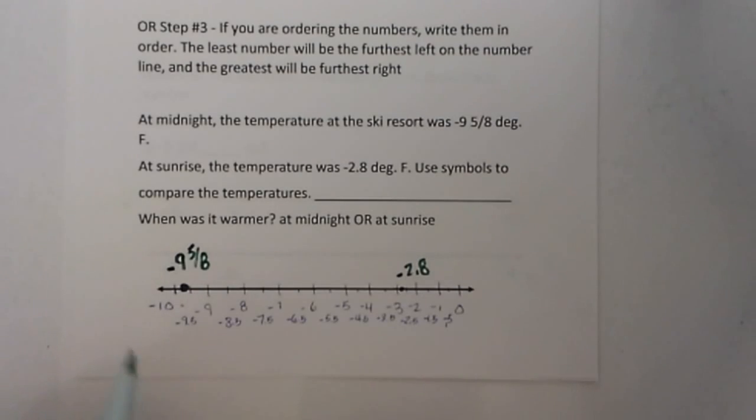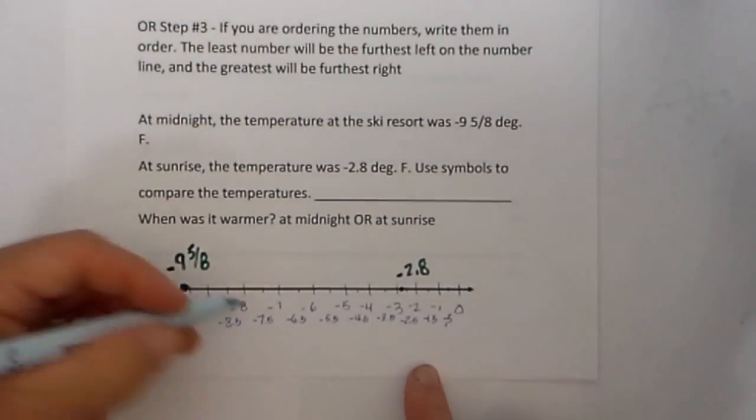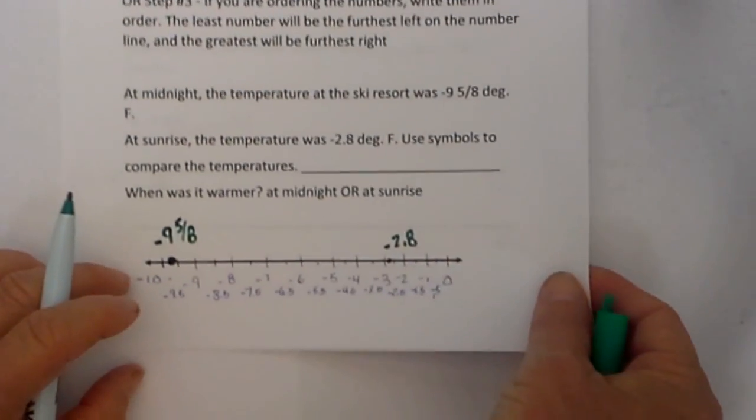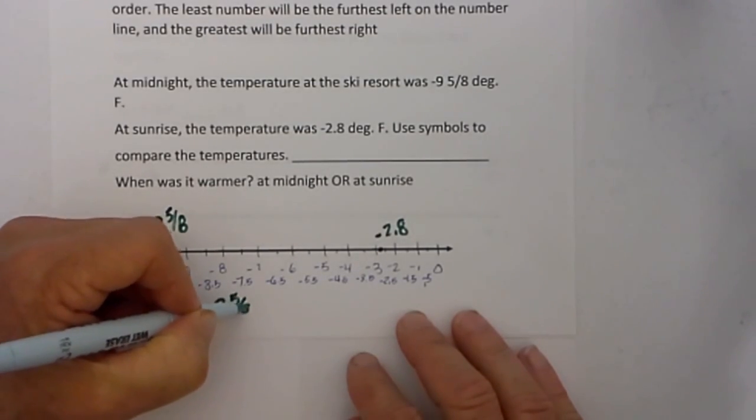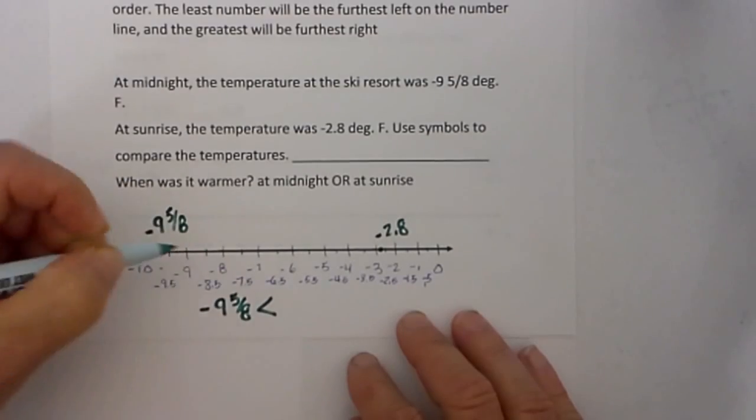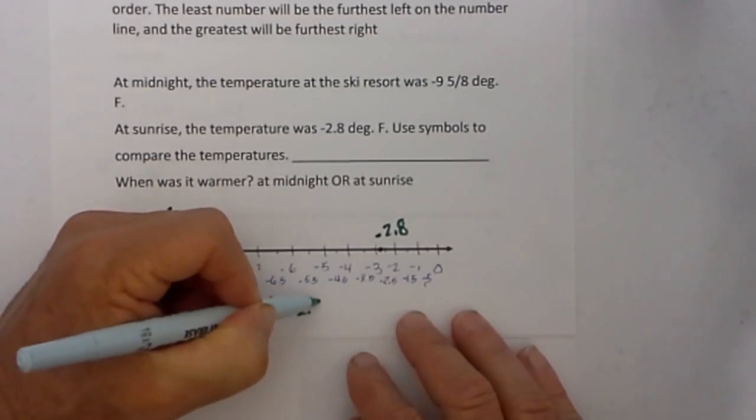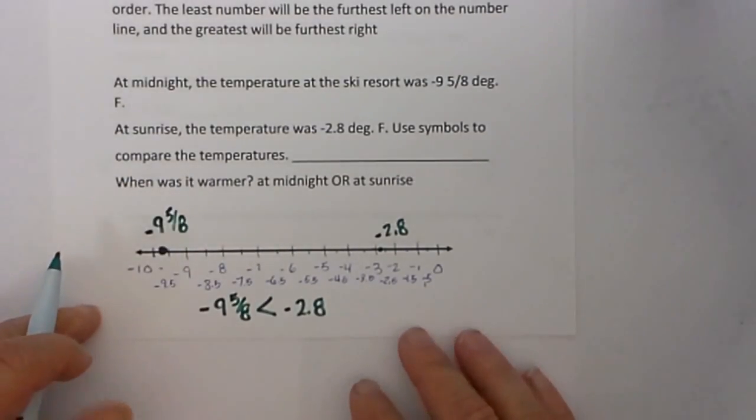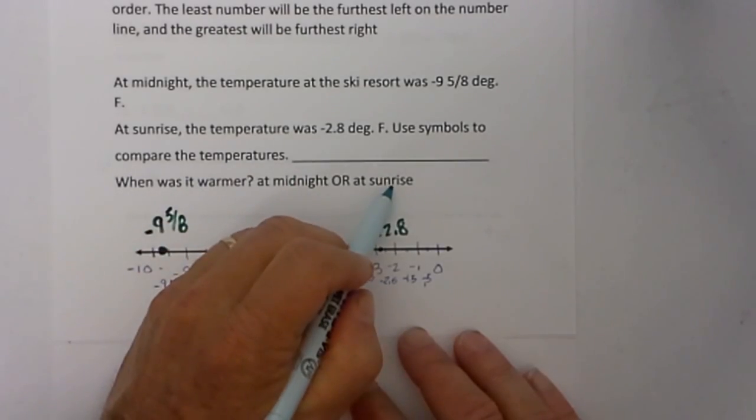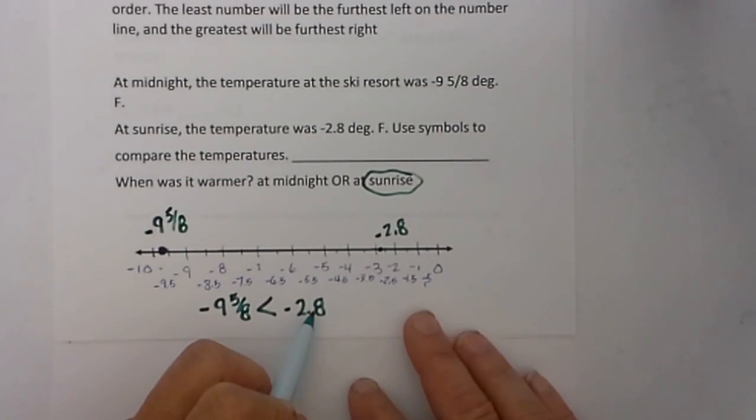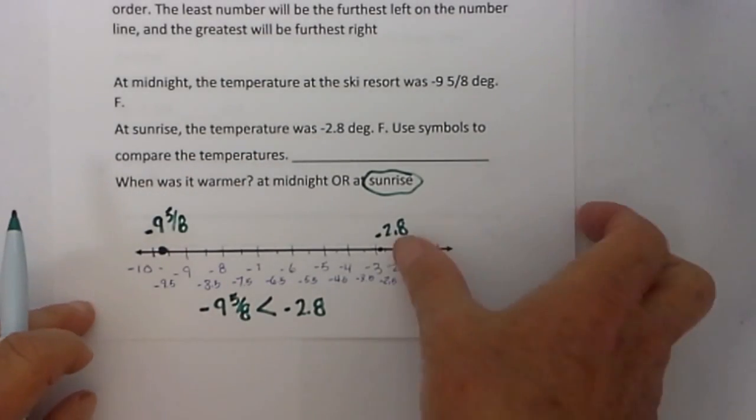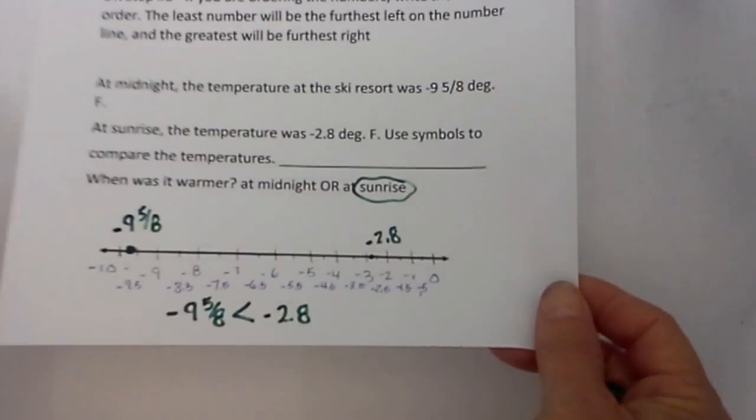So what I do next is I know that the number on the left is less than the number on the right. So I can rewrite that as, I will write this down here at the very bottom, I can write that negative 9 and 5 eighths is less than negative 2.8. And so was it warmer at midnight or sunrise? It was warmer at sunrise because it was 2.8, and 2.8 is greater than negative 9 and 5 eighths. There is one example.